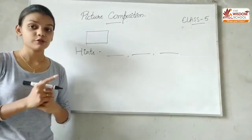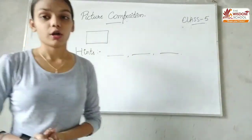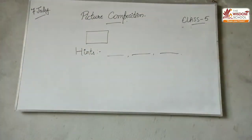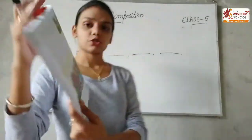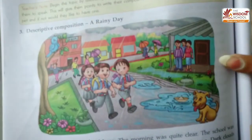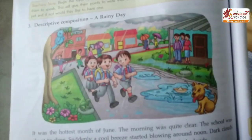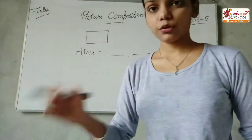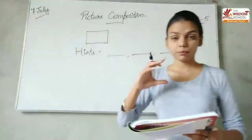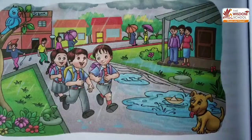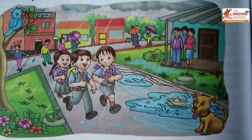Likewise, I will show you one picture — how we describe it correctly. Let's see. I have taken one picture. This one is your picture. You have to see this picture and understand what this picture is describing. Let's come to the book. I will show you the picture. See, this is a picture.